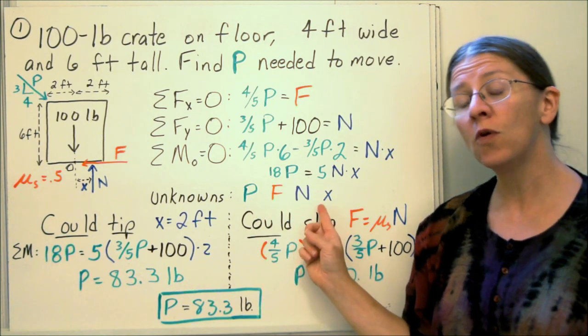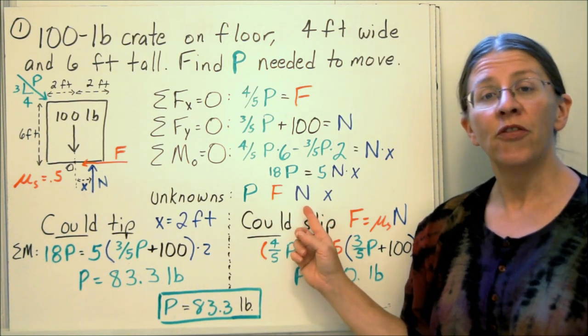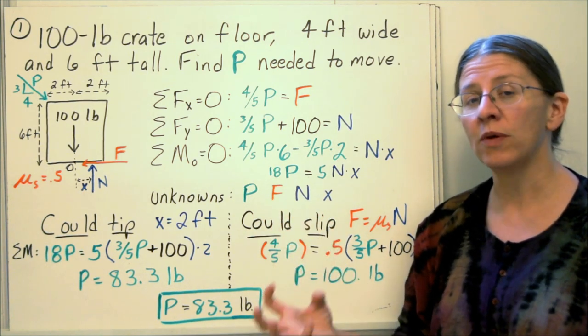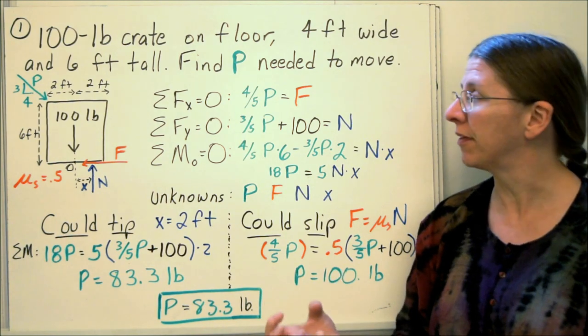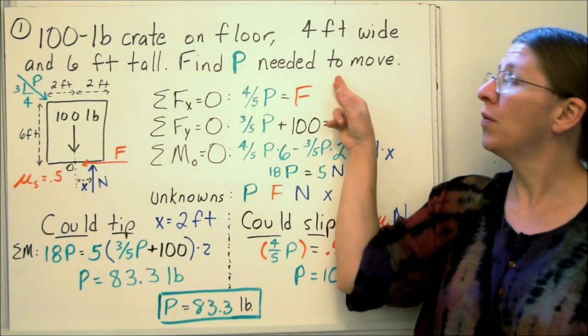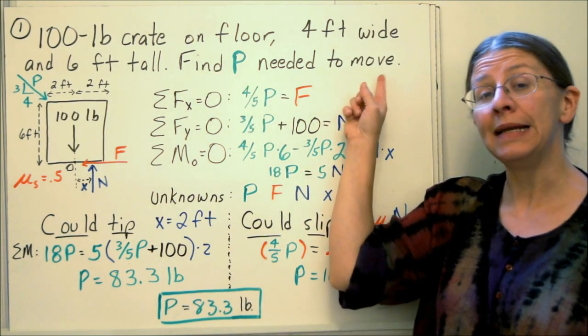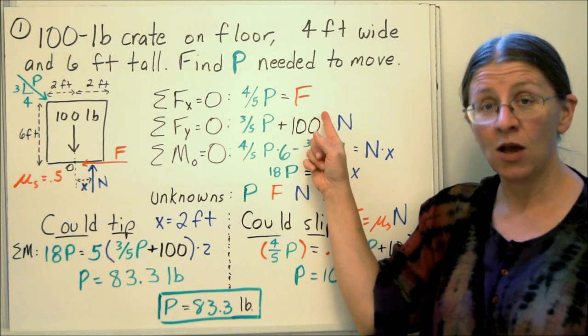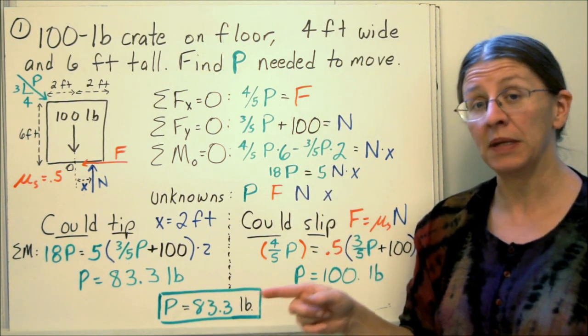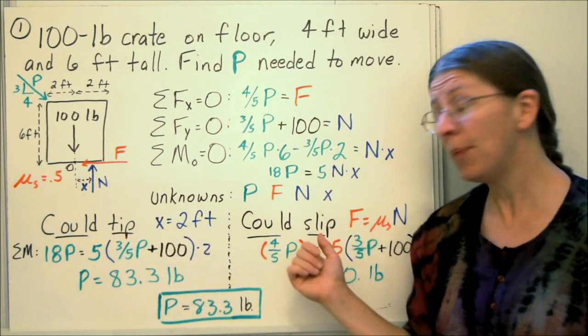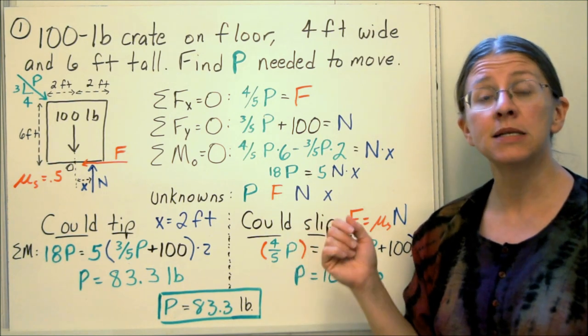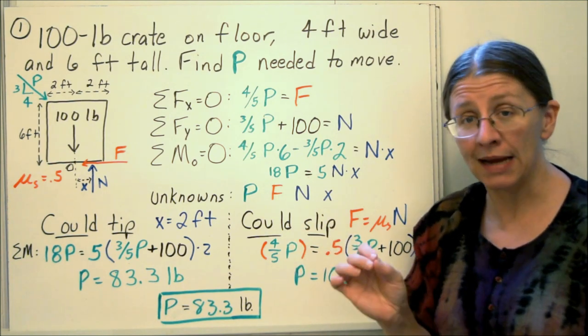So far I haven't assumed anything. My unknowns though, I've got four unknowns and three equations. I can't solve that without actually assuming something. So I'll go back to the problem, what do I want to know? I want to know what p I need to have to slide this thing, or to tip this thing. I mean, I have an object here, it could move, it could tip, or it could slip. I need to solve this problem in either case.